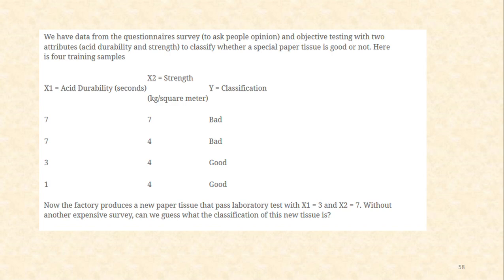Now consider a second example with numeric attribute values. We have data from a questionnaire survey asking people's opinions on objective testing, with two attributes — acid durability (X1) and strength (X2) — to classify whether a special paper tissue is good or not. There are four training samples. The first two tuples belong to the bad class and the third and fourth belong to the good class.